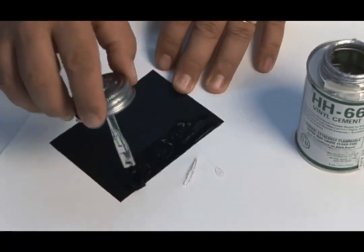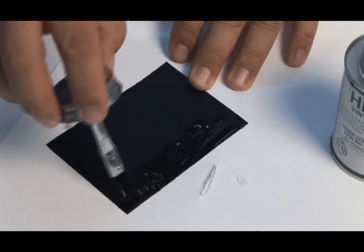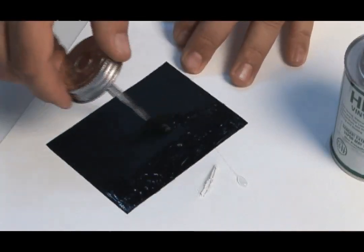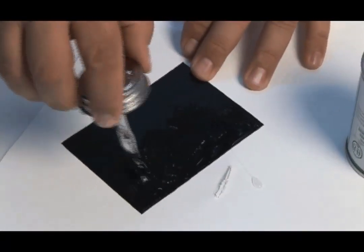We'll apply that to the patch all along the sides and in the middle as well to cover the entire perimeter and the entire surface of that patch, and then we'll also apply it to the material that we're going to be bonding it to.